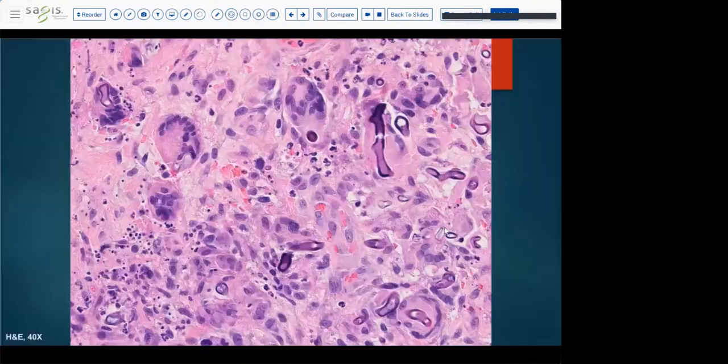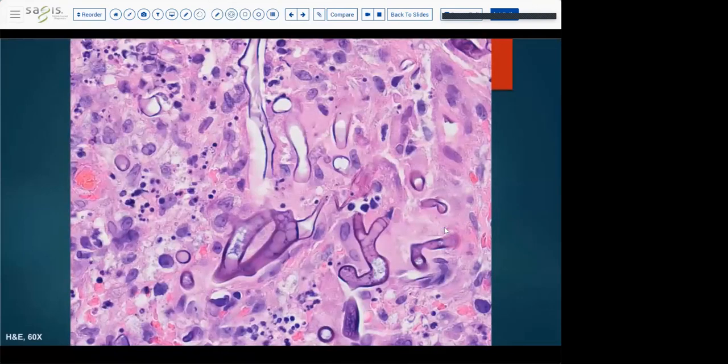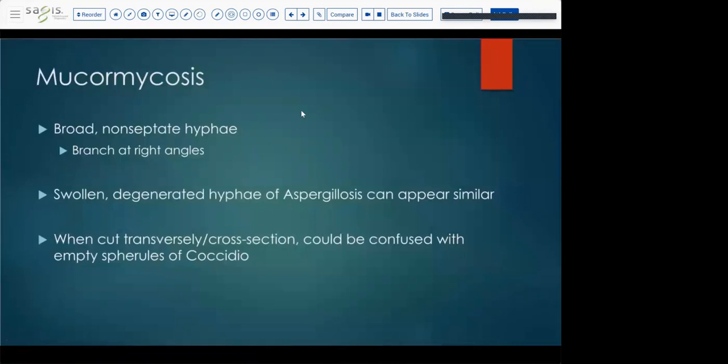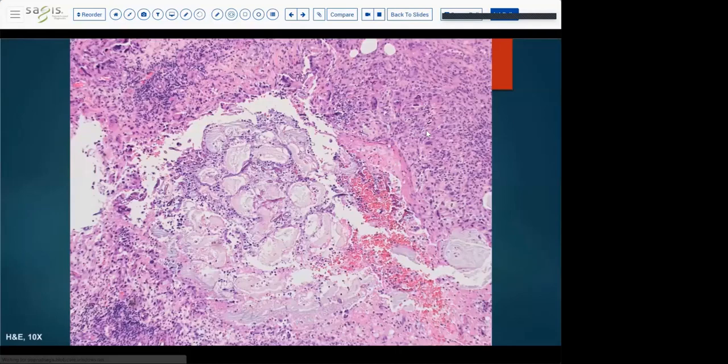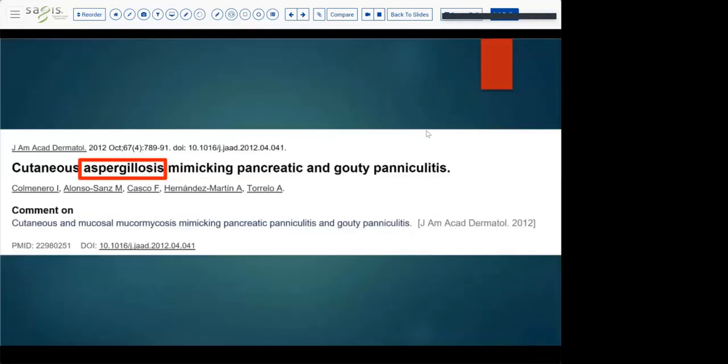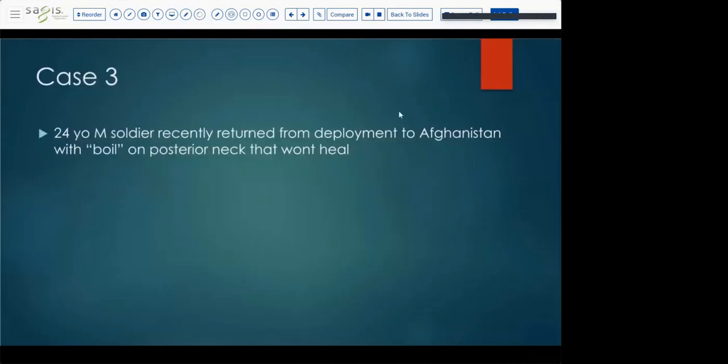Just some great photomics here of that suppurative granulomatous infiltrate. Lots of organisms, the broad non-septate hyphae branching at right angles. Just cool pictures there at 60X. There's a Brown and Brenn, which we don't really need. That's of course a bacterial stain, but it does happen to highlight some of the hyphae there. Remember that as aspergillosis and fusarium are dying, they sometimes can degenerate and look more like a zygomycosis or mucor. And also coccidio, if some of these mucor are cut on transversely, they were very round and a similar size of like an empty spherule of coccidio, so be aware of that. The teaching point here is that fungal infections can induce a panniculitis-like finding that's been reported, particularly pancreatic panniculitis and gouty panniculitis. Aspergillosis can do the same thing.